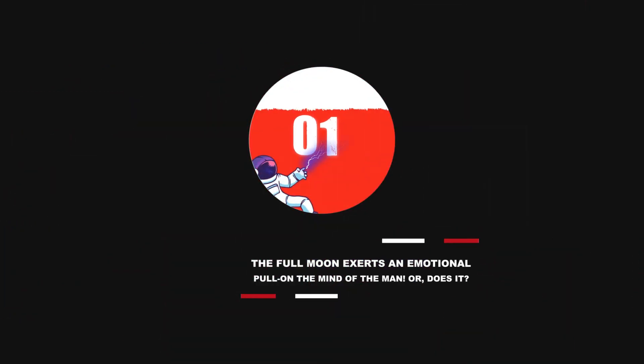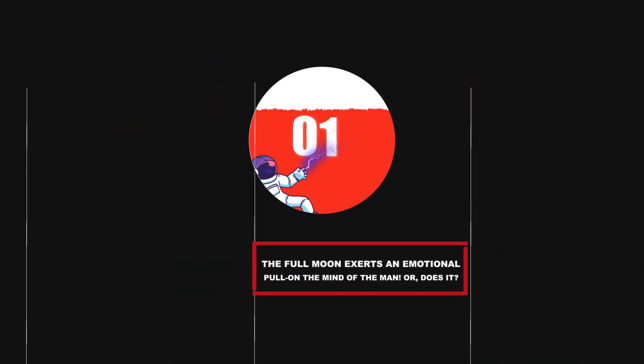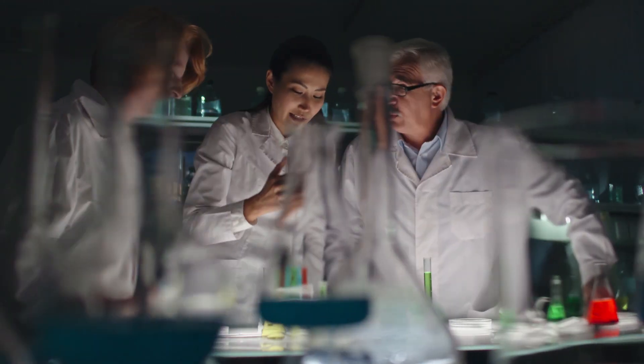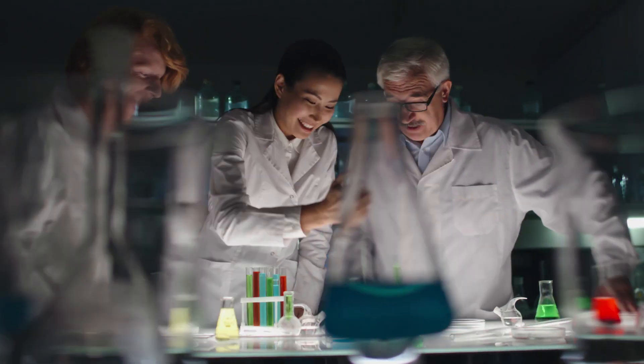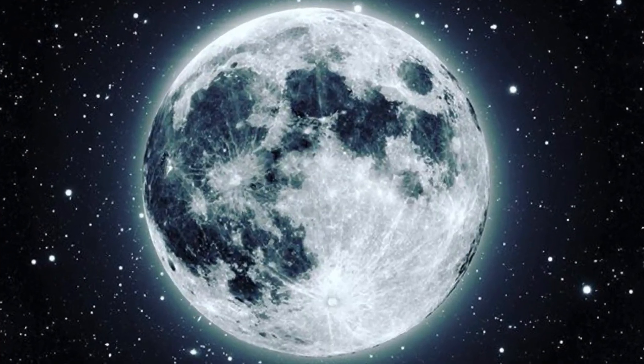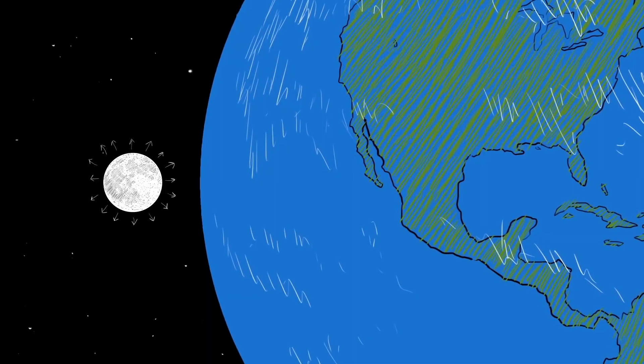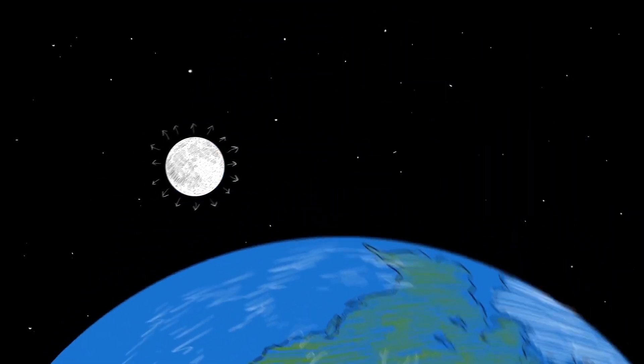Number 1: The full Moon exerts an emotional pull on the mind of man. Or does it? Scientists have yet to find challenging, persuasive evidence to support the idea of lunacy. Australian scientists trying to find any proof of a relationship between any phase of the Moon and the degree of violence or aggression.